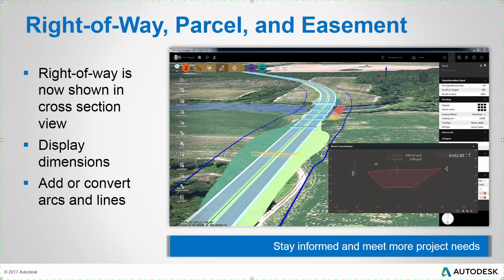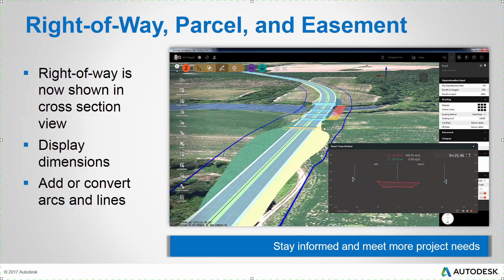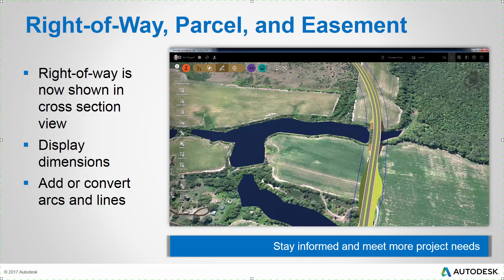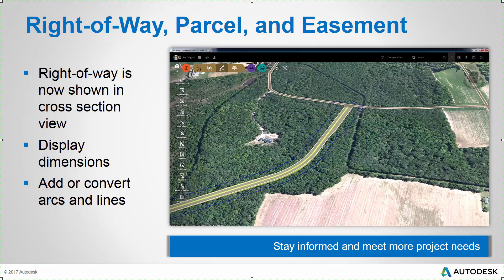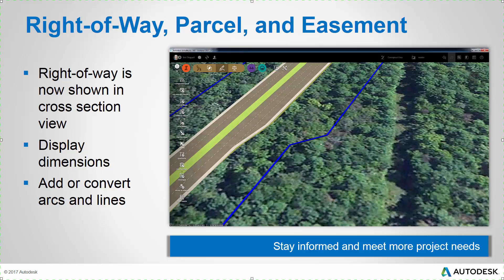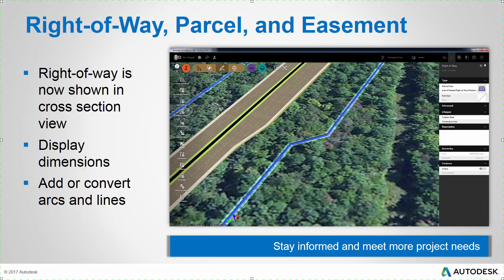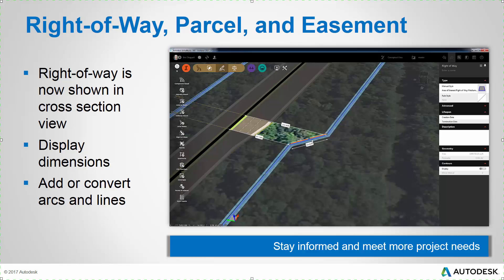Within InfraWorks 360, working with right-of-ways, parcels, and easements is easier and more powerful than ever. The right-of-ways are now shown within the road cross sections, and as I move the focus point of my cross section view, the right-of-way marker moves in and out, reflecting the true width of the right-of-way — letting me know whether or not the roadside grading is extending beyond the right-of-way. I can click on a component of a parcel or right-of-way and see important dimensions about that line segment or arc.